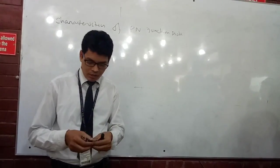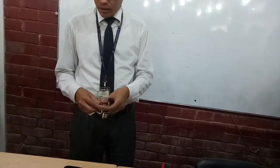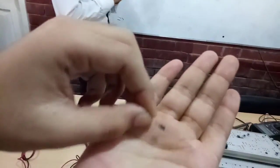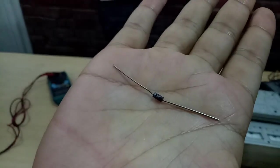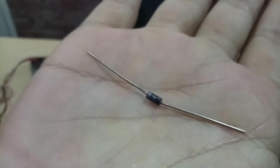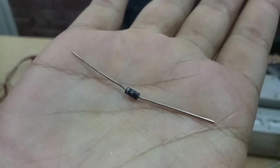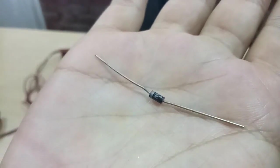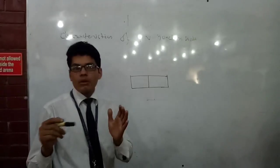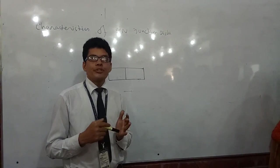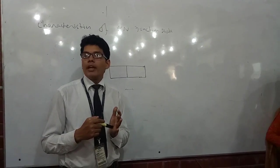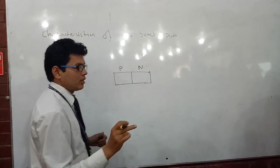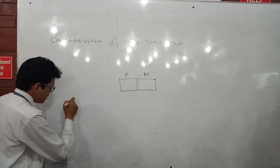This PN junction physically looks like this — you may have one and can check how it looks. If you look at it, you'll see there are two portions: one is a black portion and the other is a gray portion. The black portion is P-type and the gray portion is N-type.